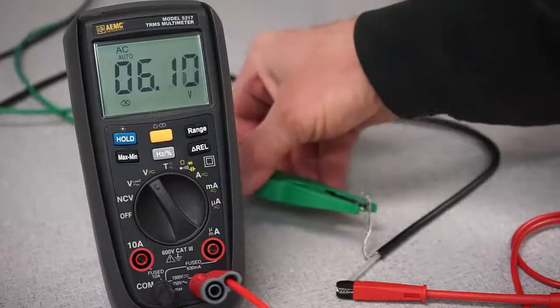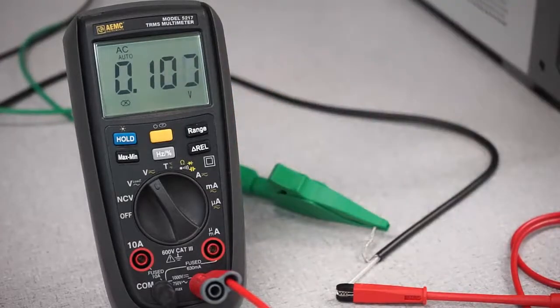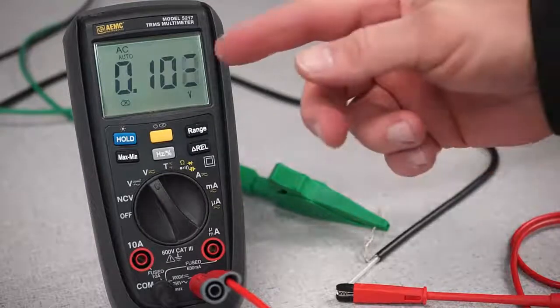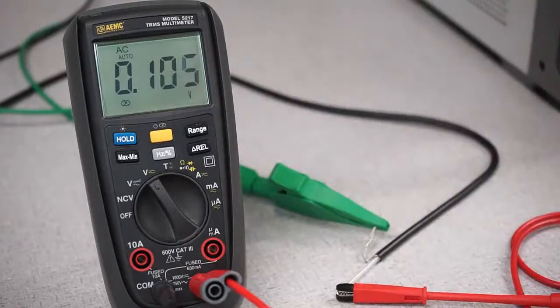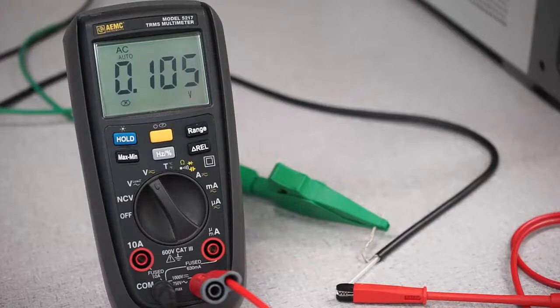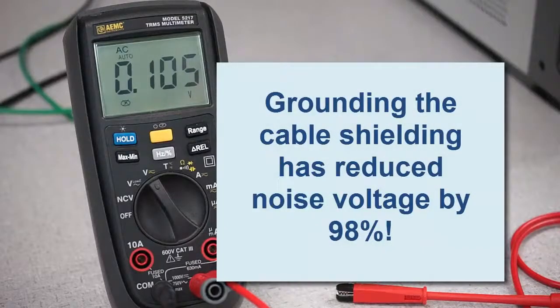Now we'll connect the cable shielding to the ground. Notice that the noise voltage has dropped to around 100 millivolts, nearly two orders of magnitude lower than our previous reading. In other words, grounding the shielding has reduced noise voltage within the cable by around 98%.